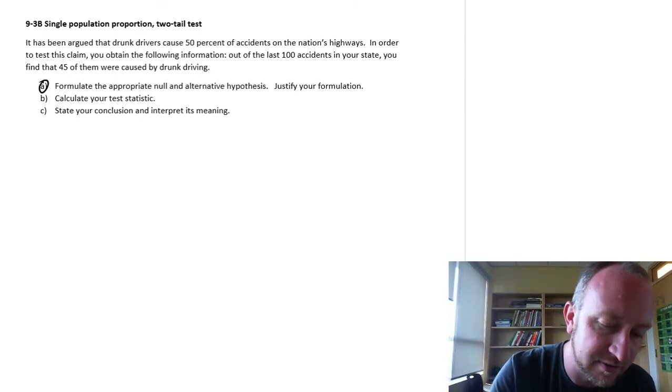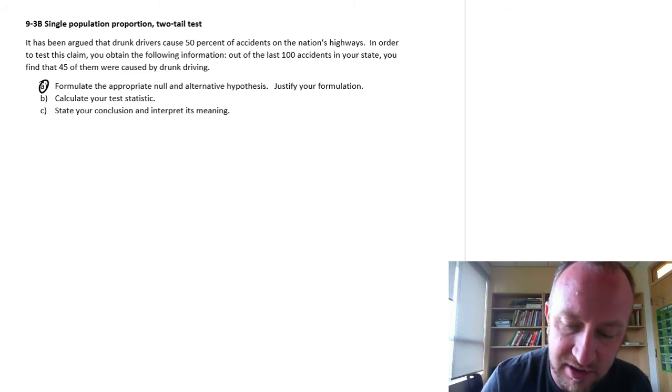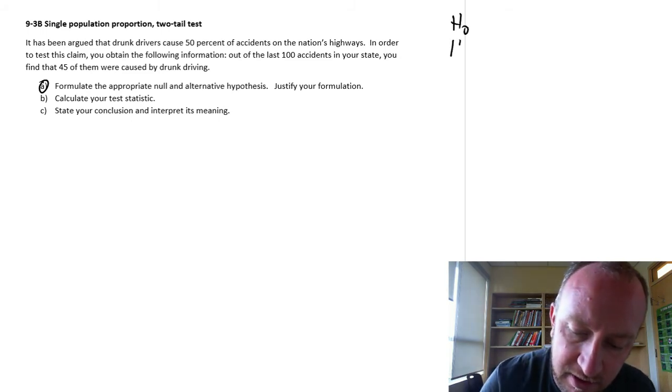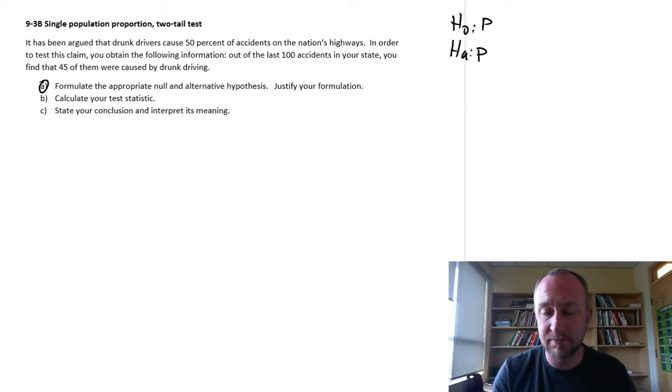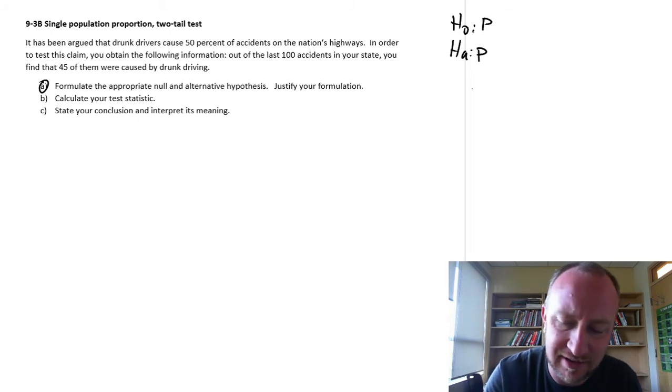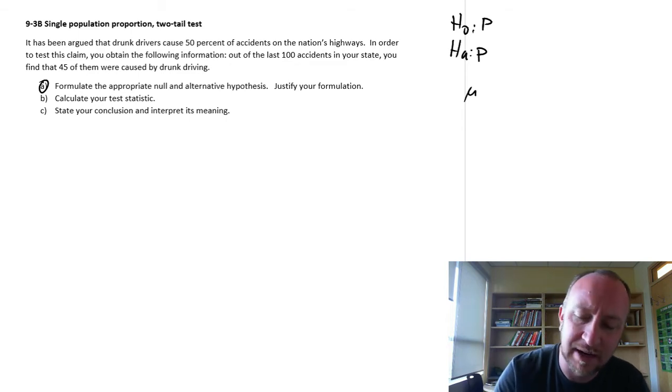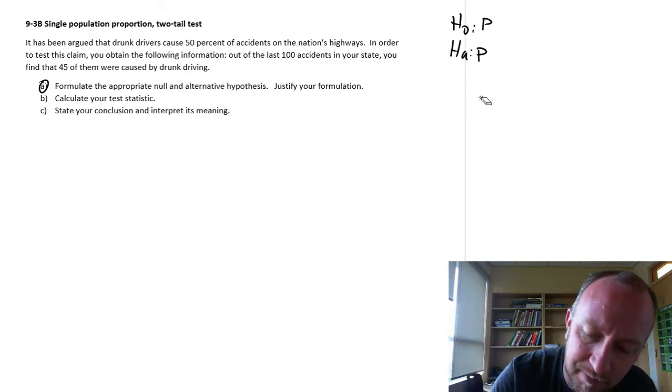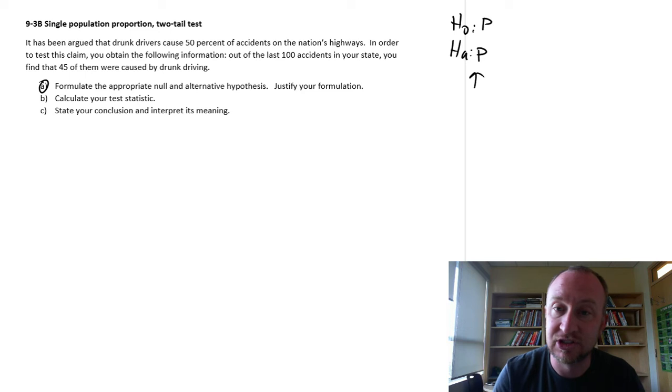So part A, formulate the null and alternative. So the null and alternative shows that we're testing a proportion. A lot of students, most of the tests that you do are often a test on a mean. So students get into the habit of just always writing μ. But if it's a test on proportions it better be shown in your test. This is a test on proportions.